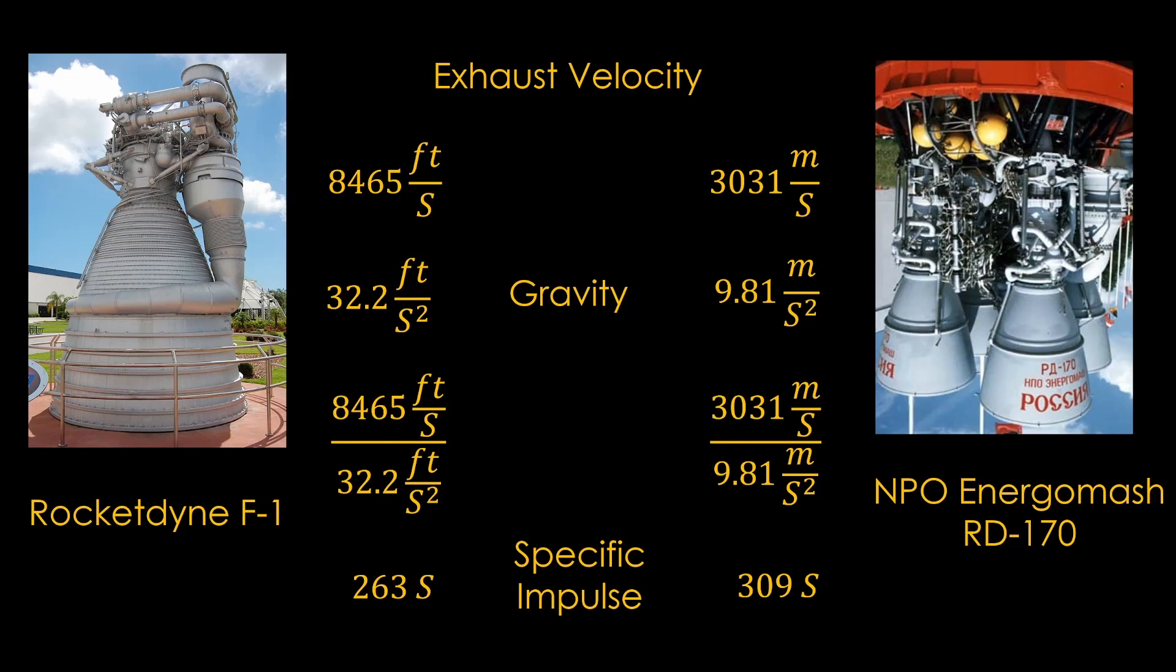Specific impulse, often written as ISP, has the units of seconds, which we often ignore when writing the values. If you're wondering why the RD-170 is so much more efficient, it is an advanced staged combustion design, and the F1 is a less efficient gas generator design. Note that the RD-170 is one engine with four separate nozzles. What all this means is that if you know the specific impulse of an engine, you can always figure out the exhaust velocity, just multiply it by gravity.